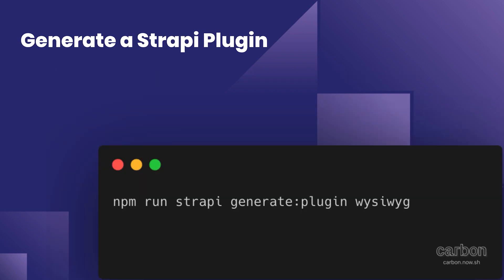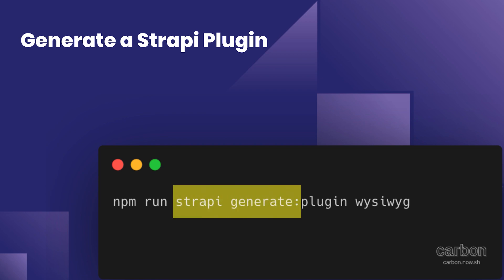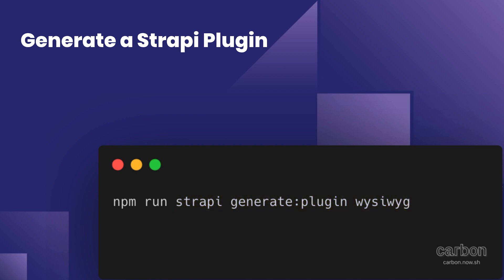The first thing we'll do, besides installing Strapi, is set up your plugin by running the command `strapi generate:plugin` followed by the name of the plugin. This will create a new folder called `/plugins`, and inside that folder you'll have a new package called `/wysiwyg` which will contain the entire code of your plugin.